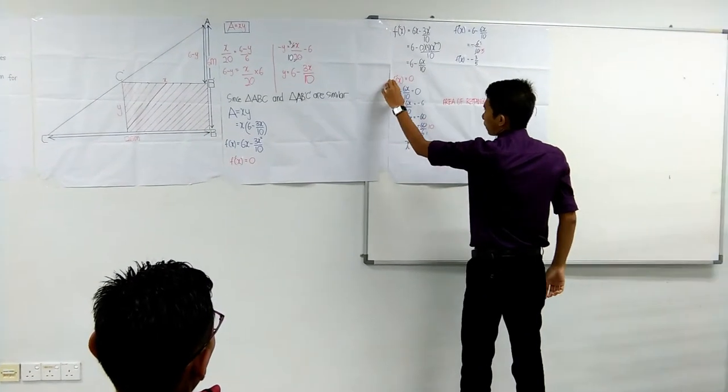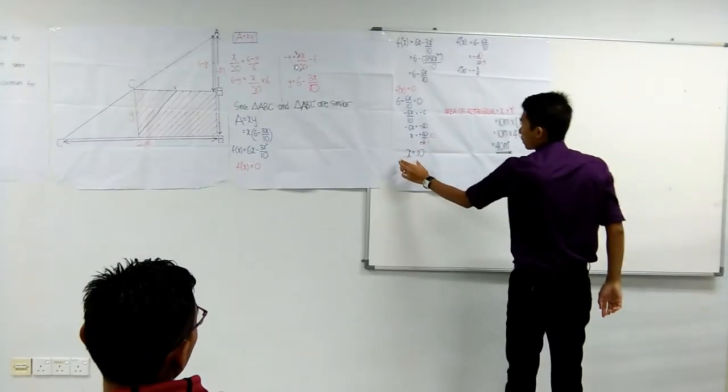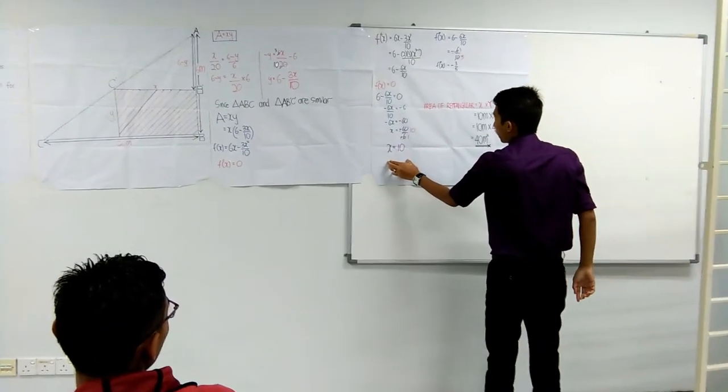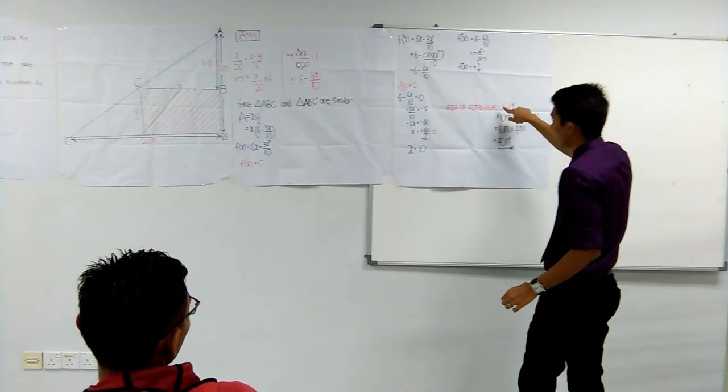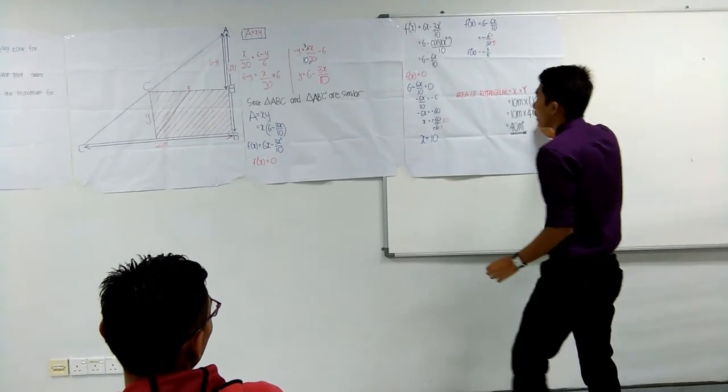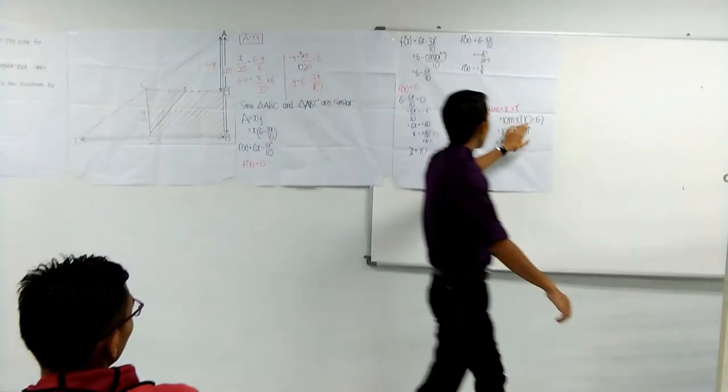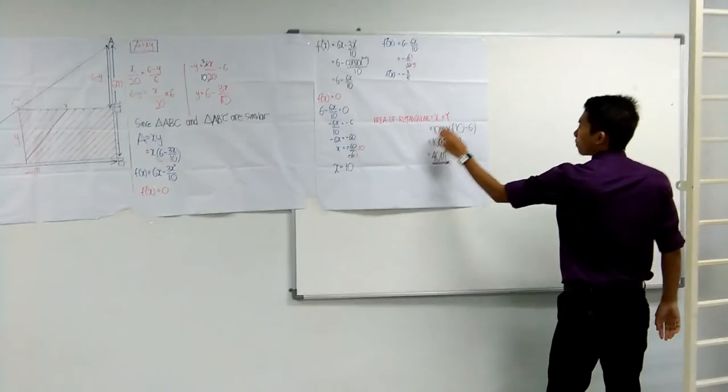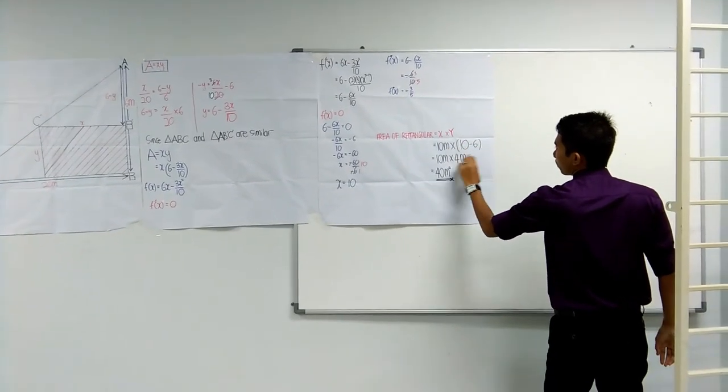We write again A prime X equal to 0 because we want to know X. We write again and then X equal to 10. For the rectangle X, we already get 10. Now, Y is 6 minus 3 times 10 divided by 10, which is 3. So the area for the rectangle is 30 square meters.